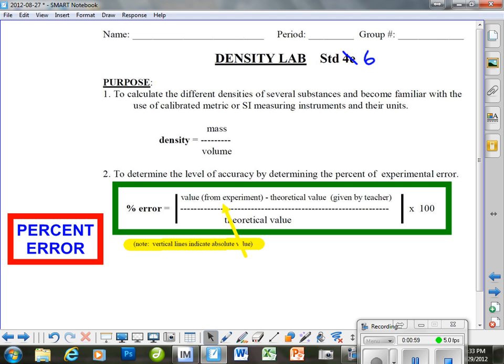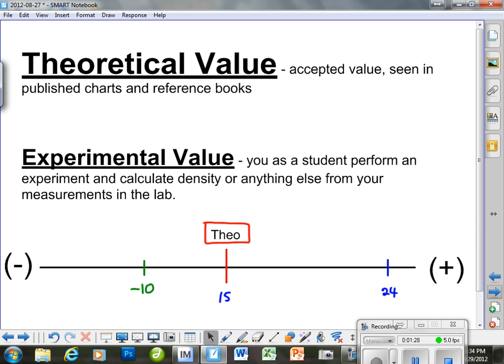Now, when you do an experiment here in class or anywhere else, you're talking about this value right here, the value from the experiment, which most likely will not be exactly the same as the theoretical. That's because we don't have accurate enough stuff. You're not an experienced chemist and a lot of things go against you to be able to get exactly the right value. So it's kind of nice to know how close did you get.